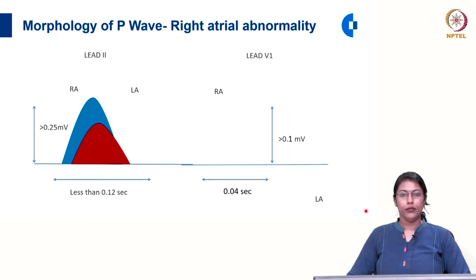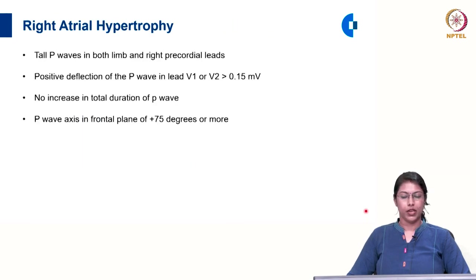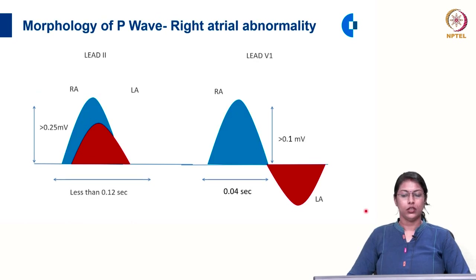In V1, in right atrial abnormality, the positive component of the biphasic wave is contributed by the right atrium, so that will be increased in amplitude while the negative component remains the same. You will see a tall positive deflection and a small negative deflection, and the duration will remain the same.